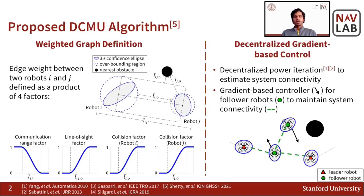For the weighted graph, we define the edge weights between two robots as a product of four factors. These factors account for the communication range, the line of sight, and collision avoidance of both robots. Given this definition, we then use a power iteration method for each robot to estimate the system connectivity, and finally we derive gradients for decentralized control.